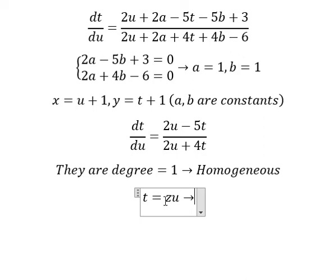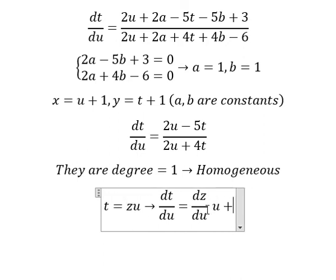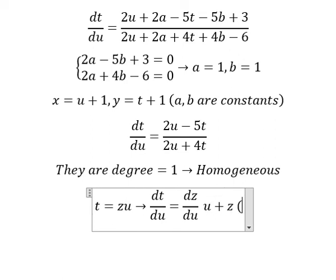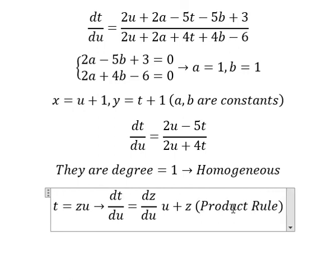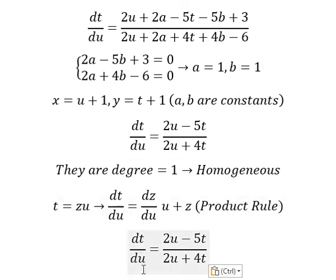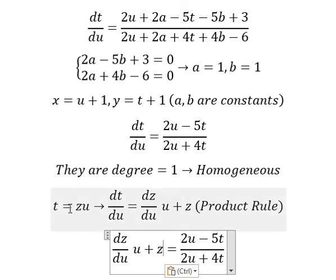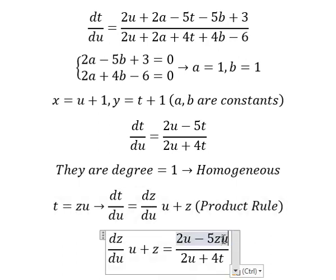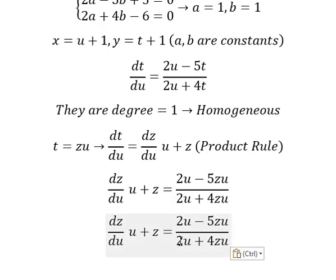By the product rule, the differential of z gives dz over du multiplied by u, and the differential of u gives 1, so we have z as well. Now we change t by z times u. We simplify, and all the u terms cancel.